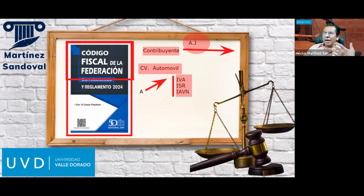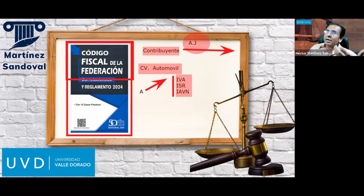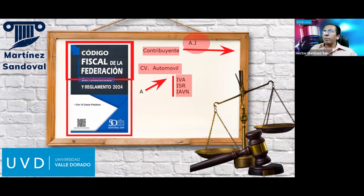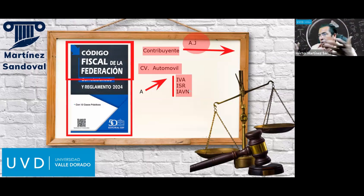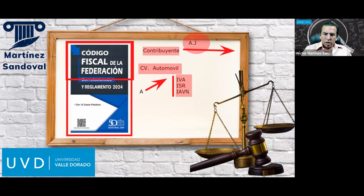Si el Estado requiere un impuesto que no se debe pagar porque no se está dentro de la hipótesis normativa, el contribuyente puede hacer valer la garantía de audiencia para iniciar una controversia con la autoridad ante los tribunales, argumentando que no se ha generado el hecho imponible.